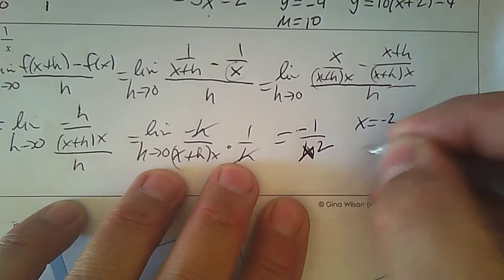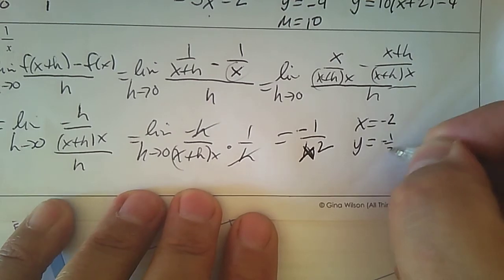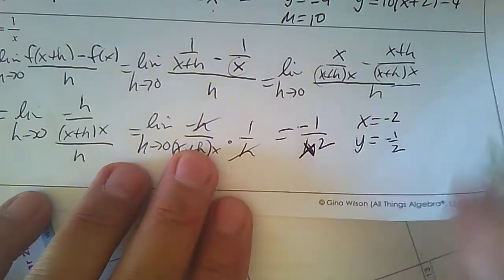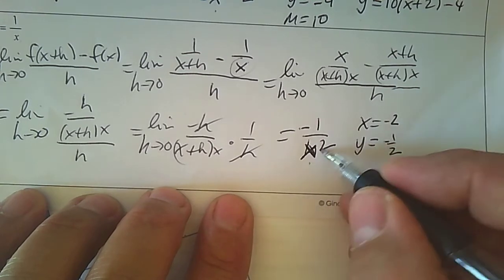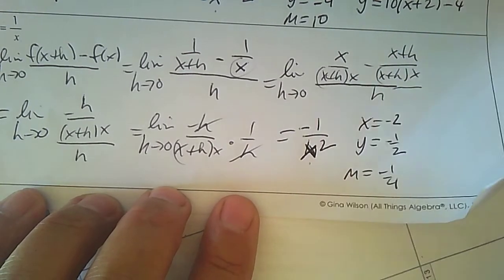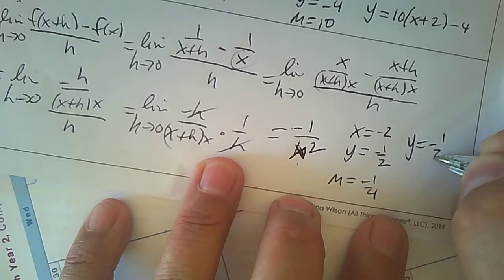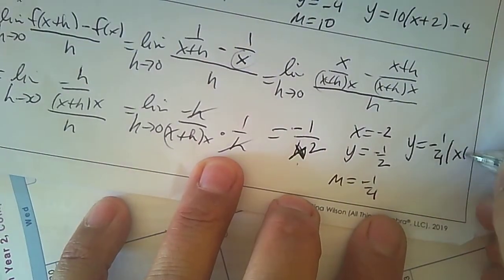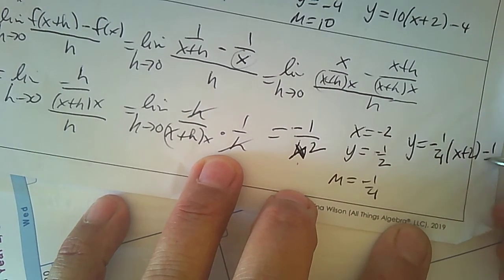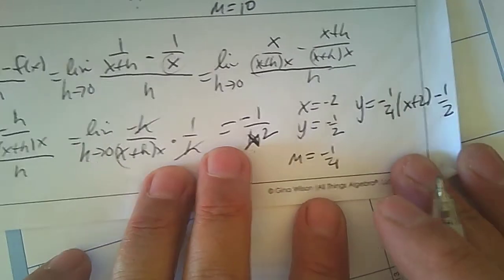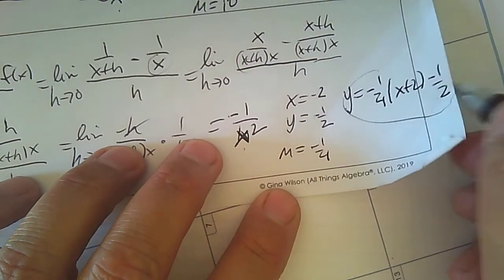So plugging in x equals negative 2: the y value is 1 over negative 2, which is negative 1 half. The slope is negative 1 over (negative 2)² which is negative 1 quarter. Putting it all together: y equals negative 1 quarter times (x plus 2) minus 1 half. There's your equation of the tangent line.